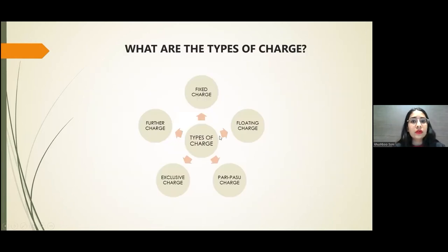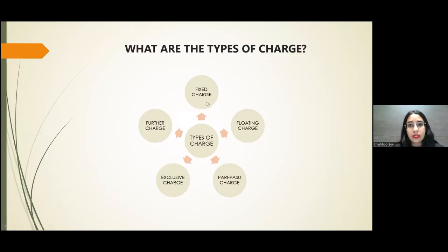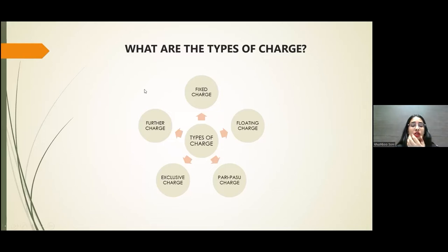There are five types of charge, and the charges are classified based on their nature and condition. On the basis of nature, there are two types of charge: fixed charge and floating charge. A fixed charge is one which is specifically created on a particular property. The company does not have the right to sell that property until and unless the charge is satisfied.